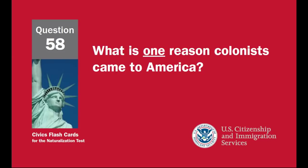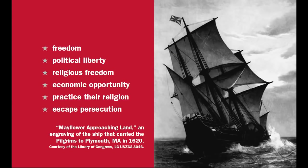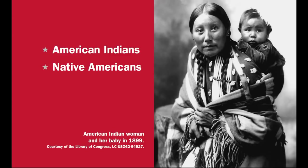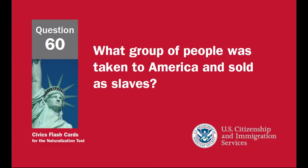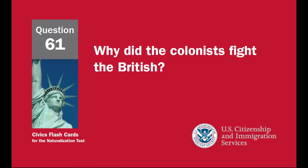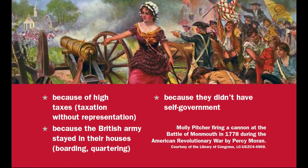What is one reason colonists came to America? Freedom, political liberty, religious freedom, economic opportunity, to practice their religion, or to escape persecution. Who lived in America before the Europeans arrived? American Indians, Native Americans. What group of people was taken to America and sold as slaves? Africans, people from Africa. Why did the colonists fight the British? Because of high taxes, taxation without representation, because the British army stayed in their houses — boarding or quartering — or because they didn't have self-government.